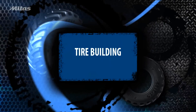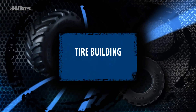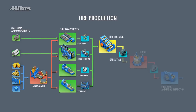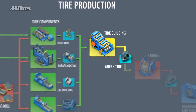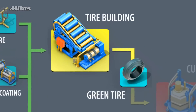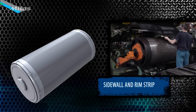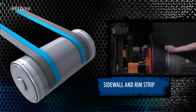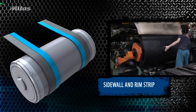At the tire building stage, all the tire components are assembled. The tire is made from components on a tire building drum. Tire building begins with the sidewall and rim strip.